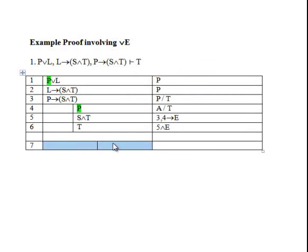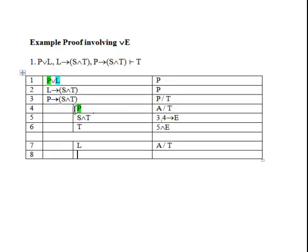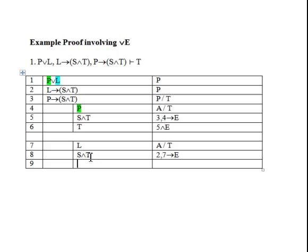Now that we have assumed the left disjunct and have derived the T, we'll go ahead and try to assume the right disjunct L and work towards also deriving T. So if we have L at line 7, line 2 is a conditional, we can derive S and T. And this is by 2, 7 conditional elimination. And then at line 9 we can use conjunction elimination, deriving the T from line 8.